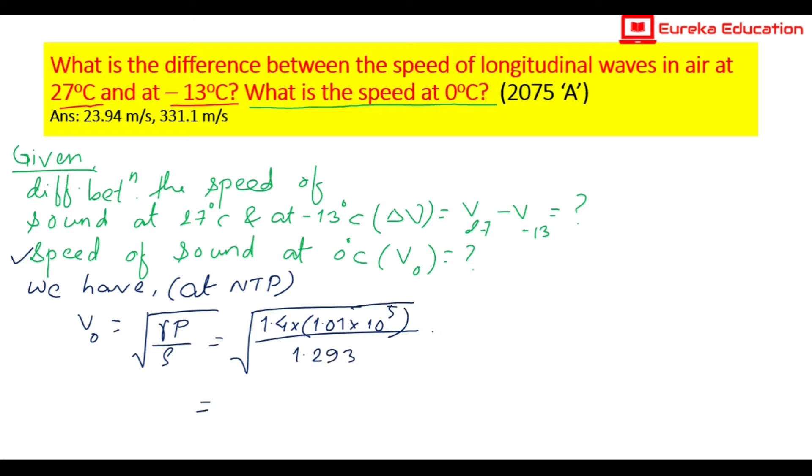So I will use the formula for speed of sound at 0 degrees C. We have the value as 330.69 meters per second. The calculation involves 10 to the power 5 divided by 1.293, giving us 330.69 m/s.